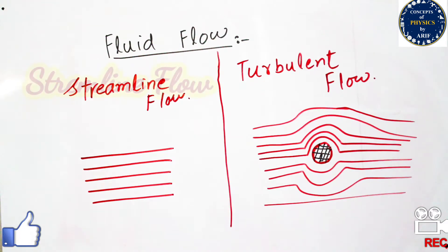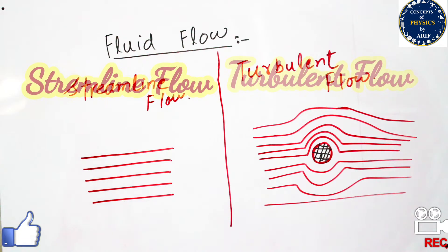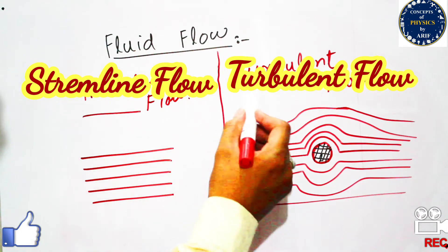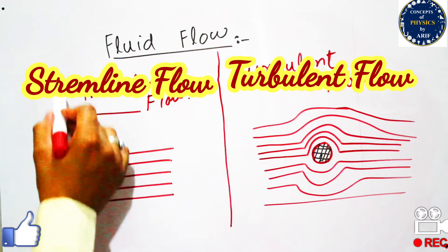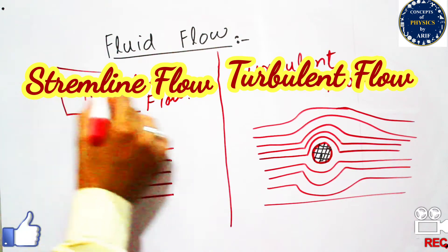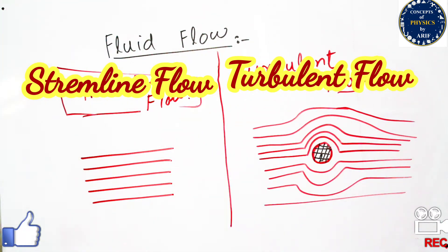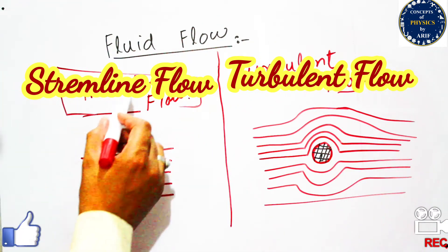Hi guys, welcome to my YouTube channel. In this video we will briefly discuss about fluid flow — how fluid can flow and what are the types of fluid flow. There are different types; mostly we will discuss two types of fluid flow, which are streamline flow and turbulent flow.